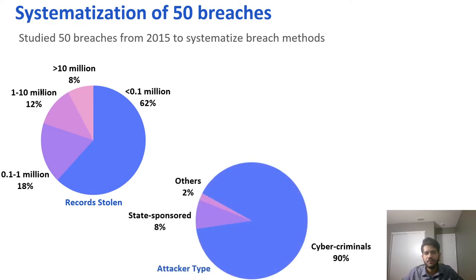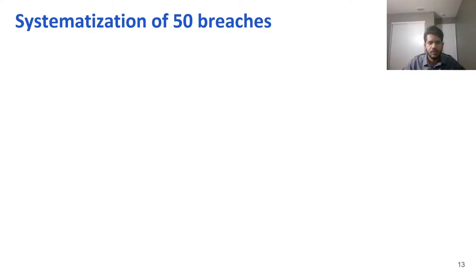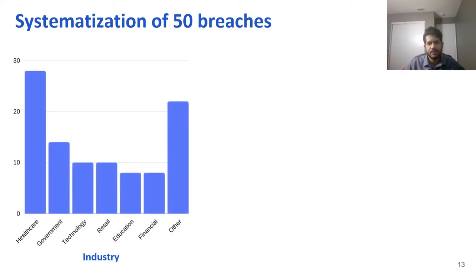For attacker type, we found that in most cases the attackers were cyber criminals seeking monetary benefit; in just 8% of cases the attackers were state-sponsored. For data record type, in 68% of cases attackers stole personally identifiable information, in 16% of cases they stole user account information such as emails and passwords, and in just 4% of cases they stole financial information. This listing shows the various industries targeted: about 28% of cases involved the healthcare sector, with government, technology, and retail sectors also commonly targeted.